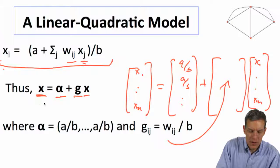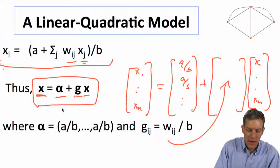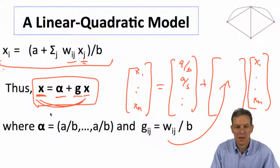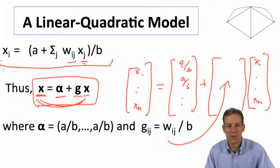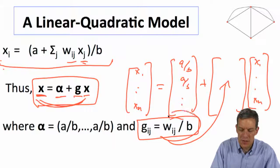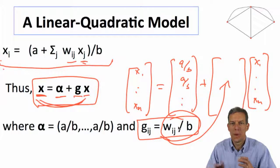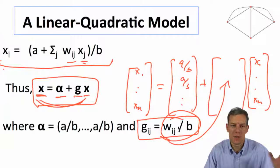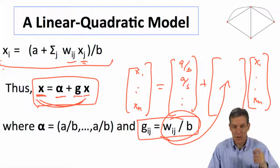So you can rewrite this in this form, and what that says is now this is an easily solved equation. So we've got a linear equation in terms of x and the g, where the matrix that we're working with in terms of the network is now just these weights, these wijs, but divided through by b, which is the relative cost of the action.